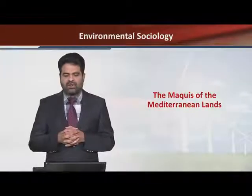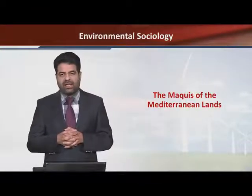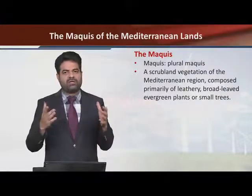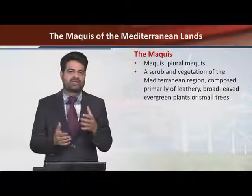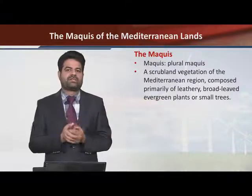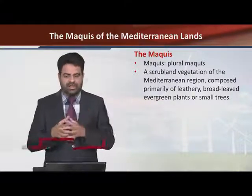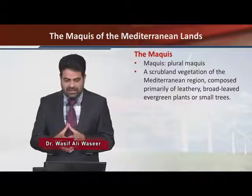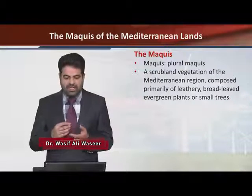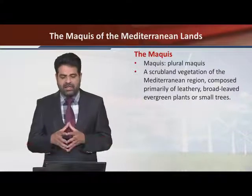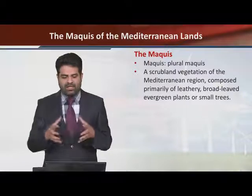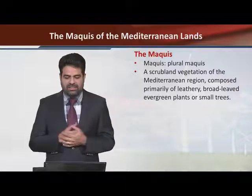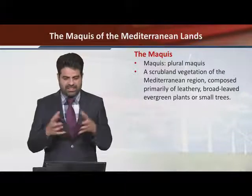The maquis of the Mediterranean lands is different from other landscapes, other natural systems, and other geographical regions. It is important to understand that the maquis is a scrubland vegetation of the Mediterranean region, with vegetation as scrublands.